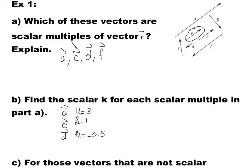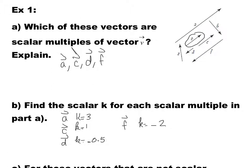And for vector F, since it's in opposite direction, so it's going to be negative, and it's almost double the size of V, so it's going to be negative two. Now, if you look at other vectors like B and E, these are not scalar multiples of V, because they are not parallel to V.